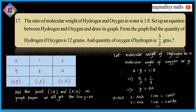Plot the points 1 comma 8 and 2 comma 16 on graph paper. We will get the line y is equal to 8x. Scale: x-axis 1 centimeter is equal to 1 unit, y-axis 1 centimeter is equal to 2 units. Now we are going to plot the points and form the equation on a graph paper.